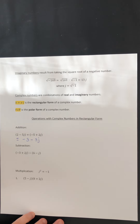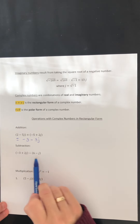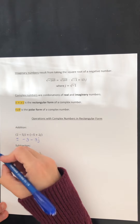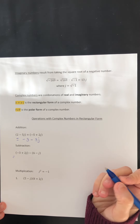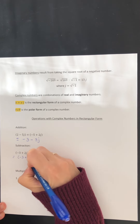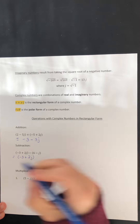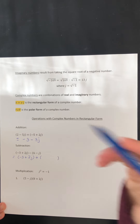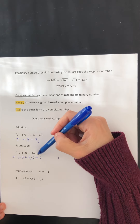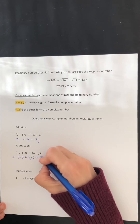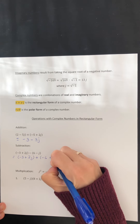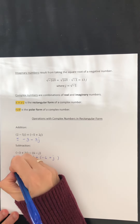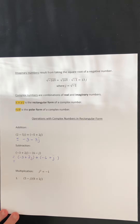When it comes to subtraction, we might want to first change to addition. When changing the operation to addition, you do not change the first complex number. You simply change the operation, and in doing so you have to multiply the second number by negative 1. So 6 minus j becomes negative 6 plus j. That is how you change from subtraction to addition. Now you simply collect like terms as we did in the previous example.